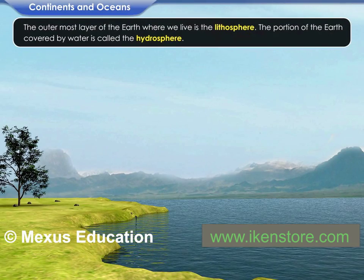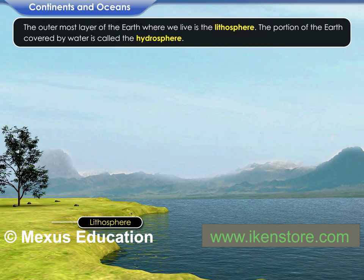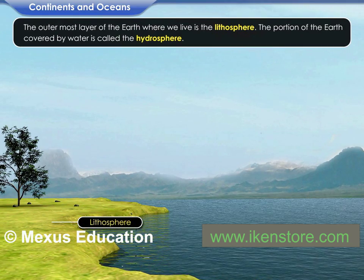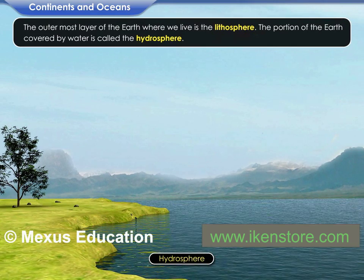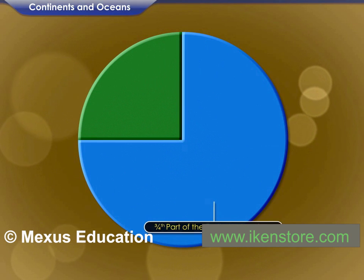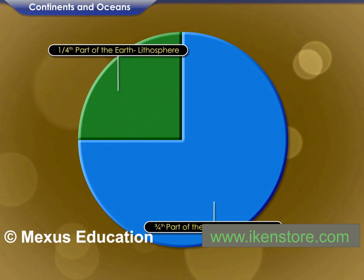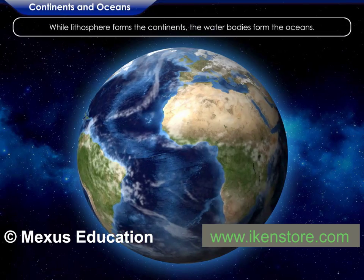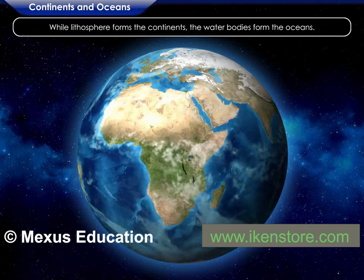The outermost layer of the earth where we live is the lithosphere. The portion of the earth covered by water is called the hydrosphere. About three-fourth part of the earth is covered by hydrosphere and the remaining one-fourth part by lithosphere. While lithosphere forms the continents, the water bodies form the oceans.